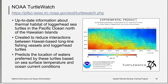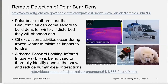A third ecosystem forecasting tool is NOAA's Turtle Watch. This tool provides up-to-date information about the thermal habitat of loggerhead sea turtles in the Pacific Ocean north of the Hawaiian Islands. It was created to reduce bycatch of turtles by Hawaii-based longline fishing vessels and predicts waters preferred by these turtles based on sea surface temperature and ocean current conditions. Another applied example involves polar bear mothers near the Beaufort Sea, who come ashore to build dens in winter. If a mother is disturbed during this period, she may abandon her den and the cubs inside.